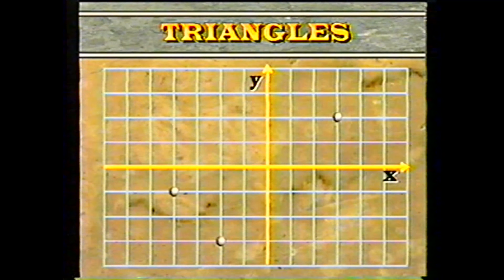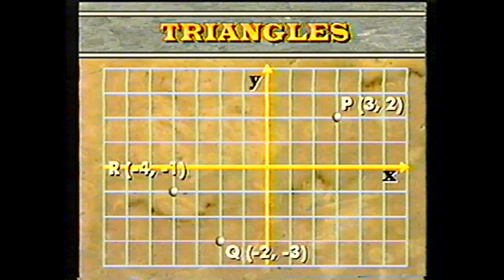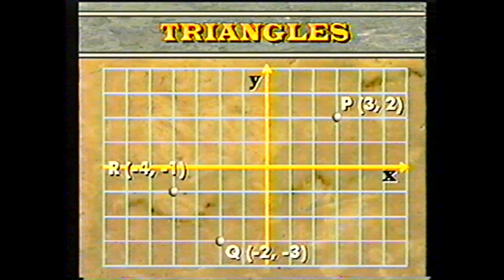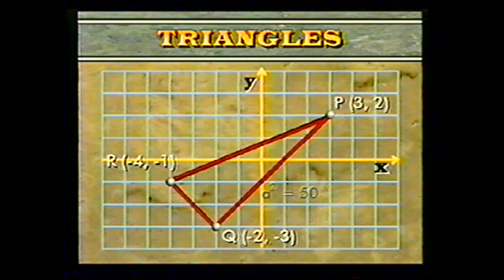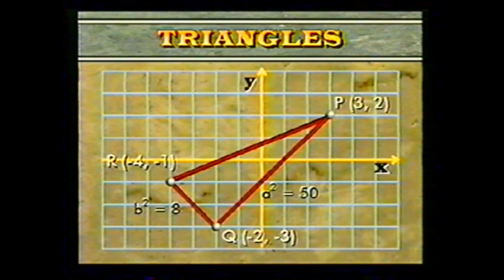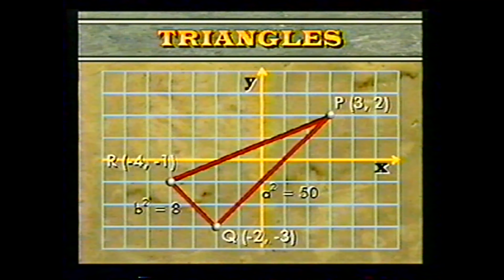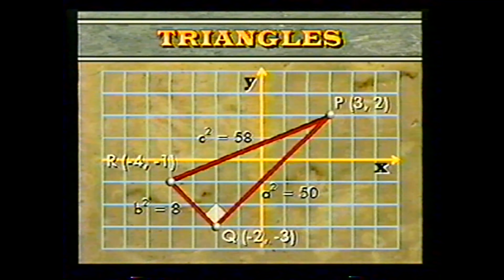Suppose you are given three points P(3, 2), Q(-2, -3), and R(-4, -1). Is the triangle formed by these three points a right triangle? To find out, determine the lengths of the sides. The square of the distance between P and Q is 50. The square of the distance between Q and R is 8. The square of the distance between P and R is 58. Since 50 plus 8 equals 58, we can conclude that triangle PQR is a right triangle, with the right angle at vertex Q.